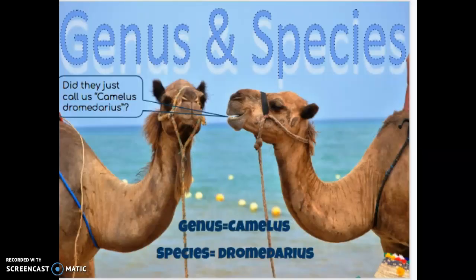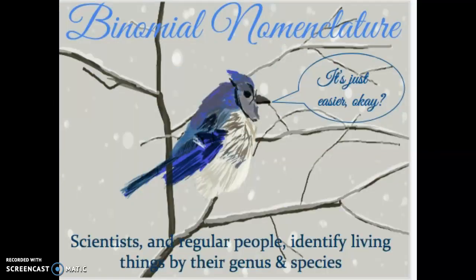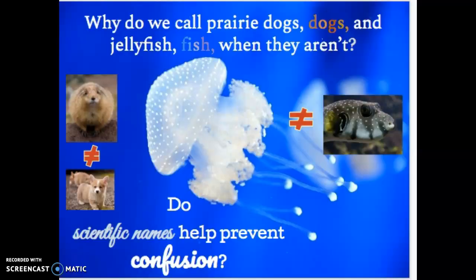Genus and species. The genus of a camel is Camelus. The species is Dromedarius. Another way to say genus and species is binomial nomenclature. Scientists and regular people identify living things by their genus and species. Binomial nomenclature is how scientists refer to living things. Why do we call prairie dogs dogs and jellyfish fish when they aren't? Do scientific names help prevent confusion?